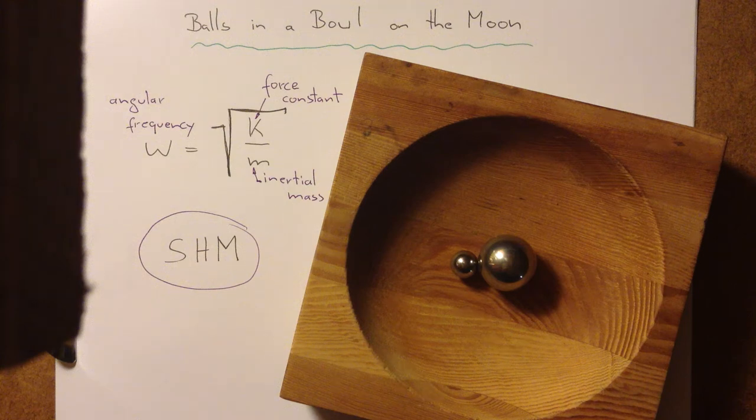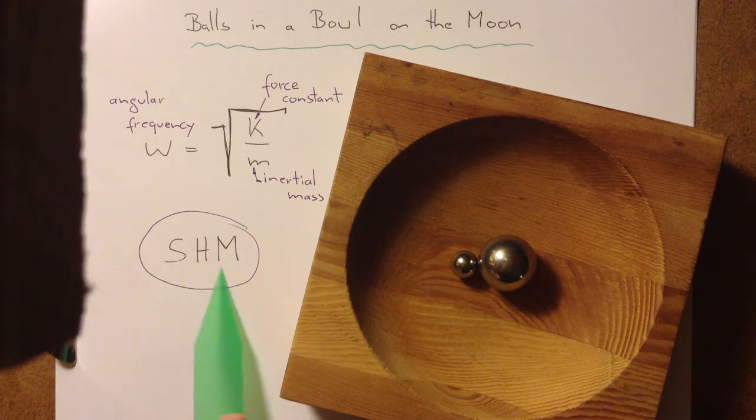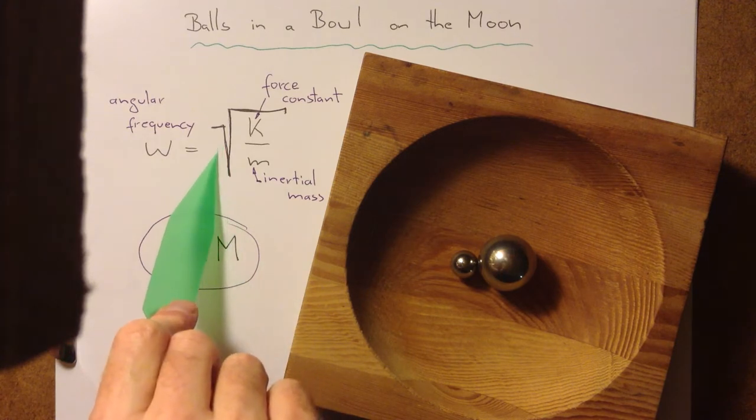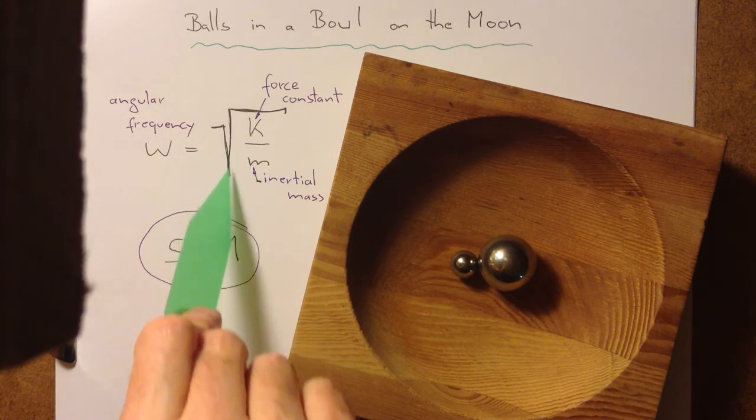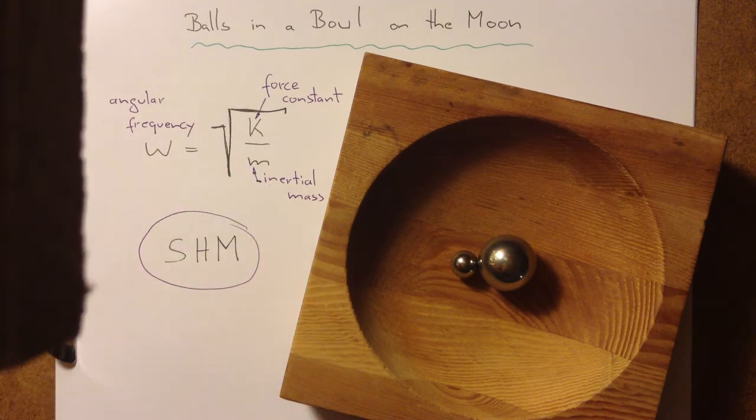Two balls in a bowl and the moon, how does that hang together? Everyone learns that angular frequency of simple harmonic motion depends on the square root of the force constant of the restoring force divided by the inertial mass M of the oscillator.